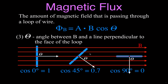When the magnetic field and the coil of wire are parallel to each other, there's no magnetic field actually passing through the loop of wire. The angle between the magnetic field and the line perpendicular to the face is 90 degrees, and the cosine of 90 is zero. So if the area and field strength are the same for all cases, as we turn the coil until it's parallel to the magnetic field, we reduce the magnetic flux to zero.